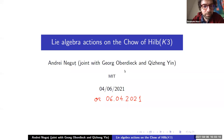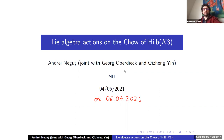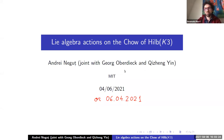Welcome everybody. It's a pleasure to have Andre Negutze from MIT, who is going to talk about Lie algebra actions on the Chow groups of Hilbert K3. If everybody wants to keep the camera on like last time, I think it was nice.